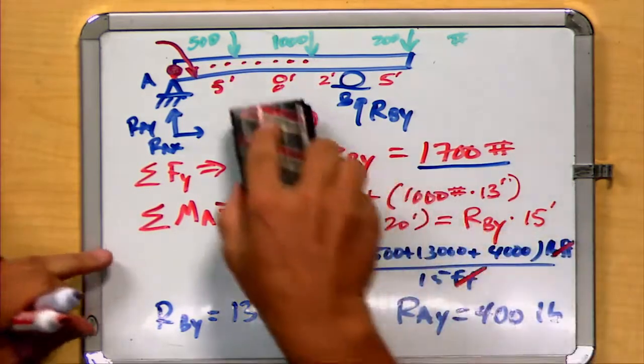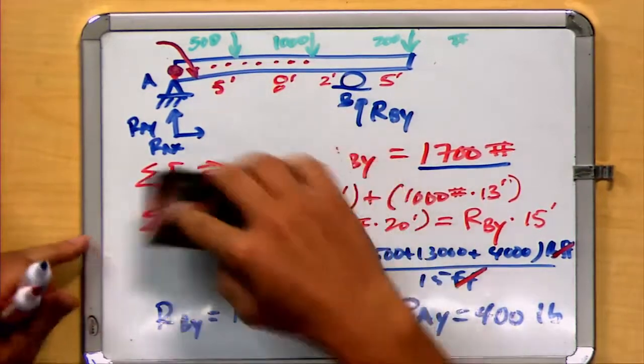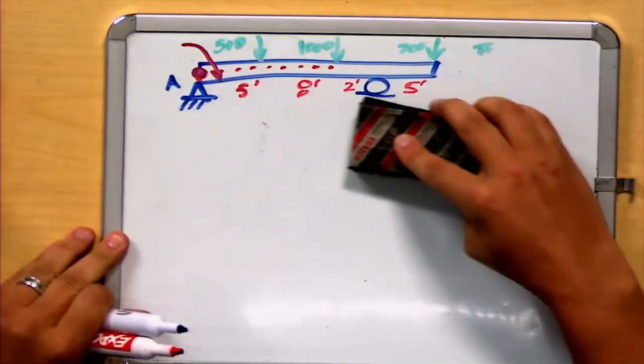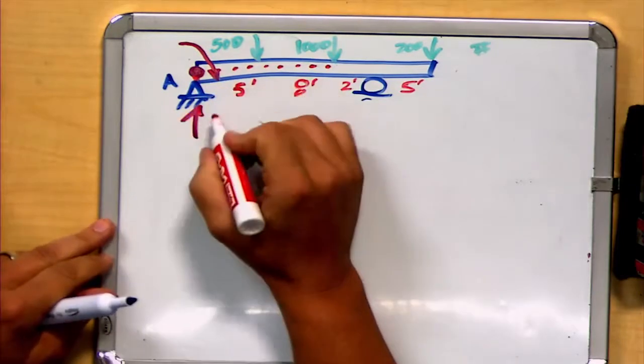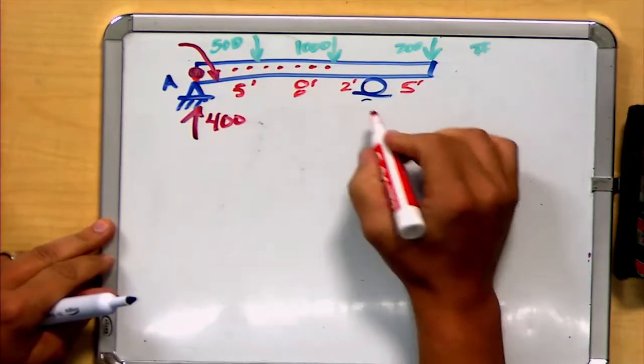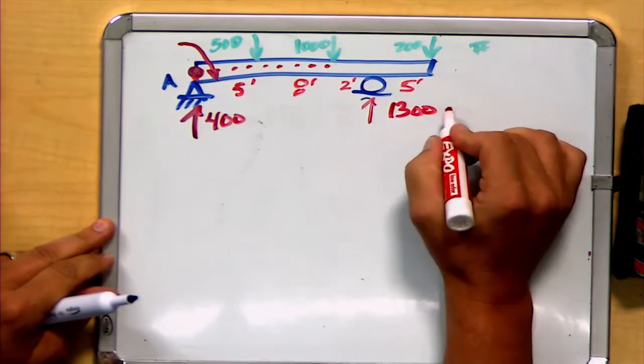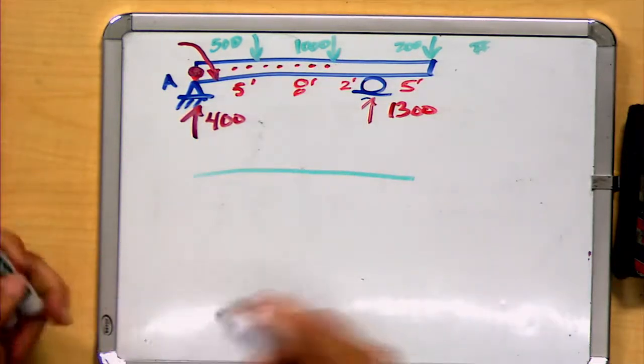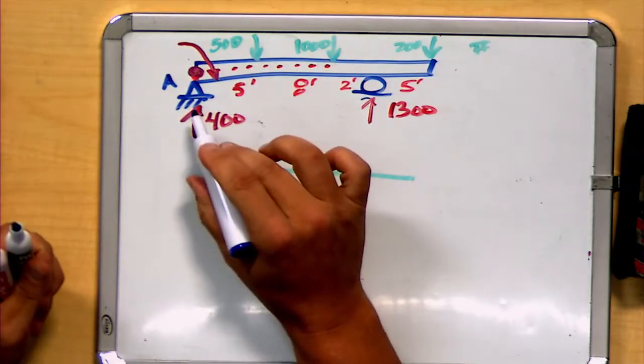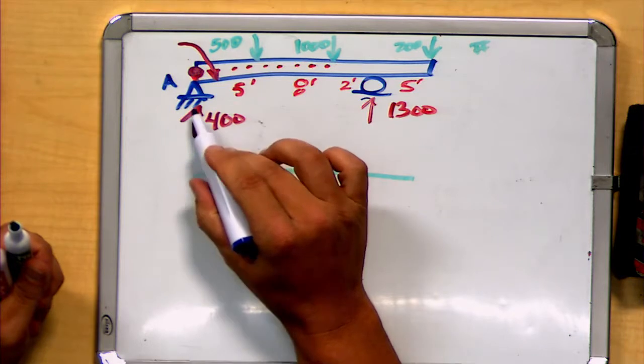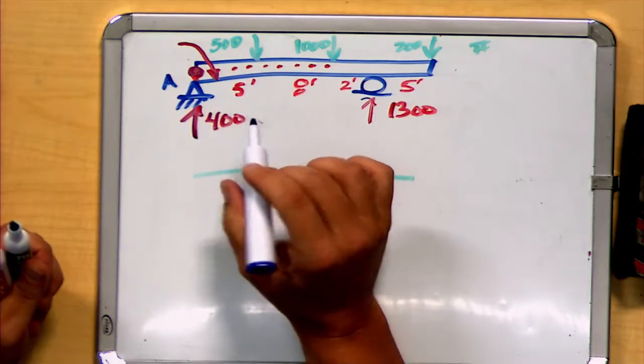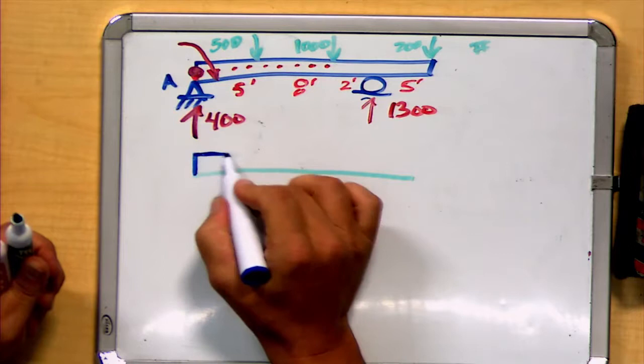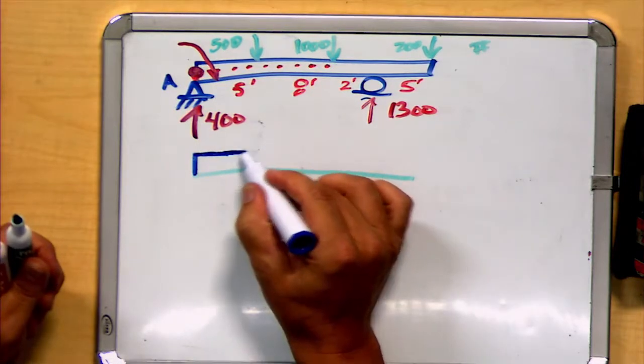Now that we've found those reactions, let's create a shear diagram. And from that, create the bending moment diagram. First, let's go ahead and modify our reactions. Here's our 400 pound reaction, and here is our 1,300 pound reaction. For our shear diagram, we can use that convention where we move up whenever there is a reaction or load that moves up, and move down whenever there's a load that moves down.